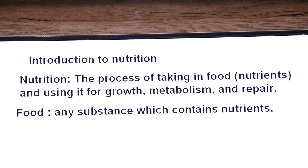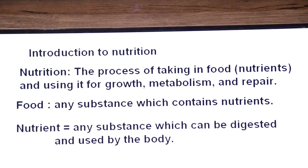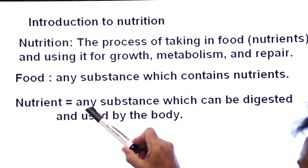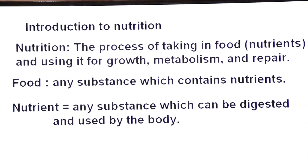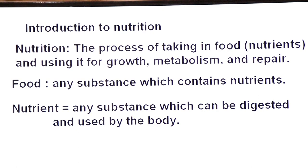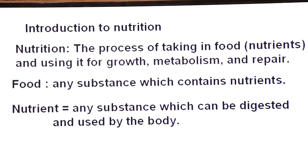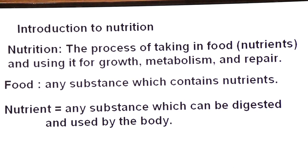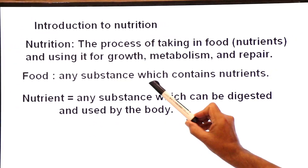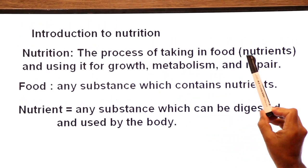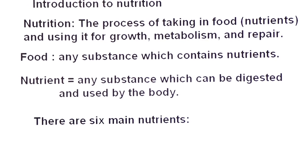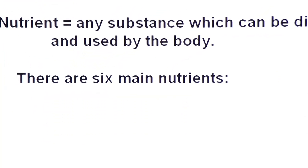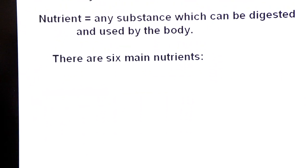What is a nutrient? Any substance which can be digested and used by the body — for example, protein, lipid — these are nutrients that after being digested provide end products used in growth, metabolism, and repair. There are six main types of nutrients found in different foods.